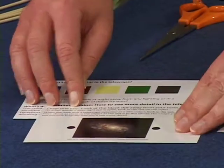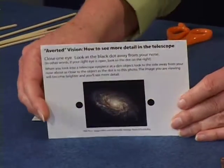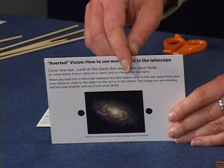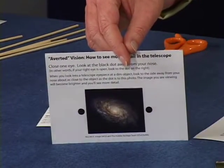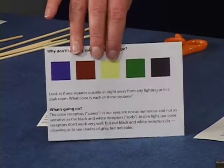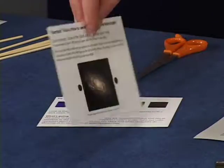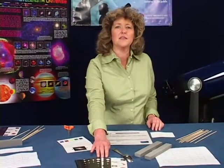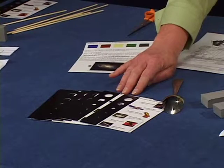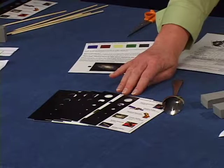In the bag, you'll find two color squares and averted vision cards. This card is used at the telescope for explaining why you don't see much color at the eyepiece, and for showing your visitors what you mean when you say use averted vision to see more. Some field of view cards held at arm's length show about how much of the sky various telescopes can see at a time.